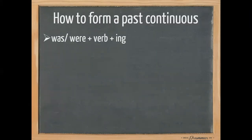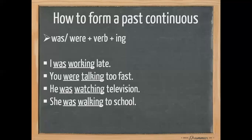How to form a past continuous. According to the rule, we use the past tense of the verb 'to be', so we use 'was' or 'were', plus the base form of the verb, plus '-ing'. In the beginning we use the subject — he, she, it, we, you, they — then we use 'was' or 'were', then we need the verb which is the base form plus '-ing', then we need the complement.